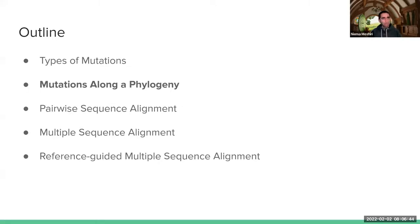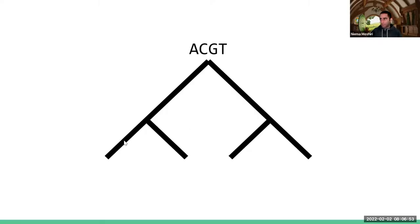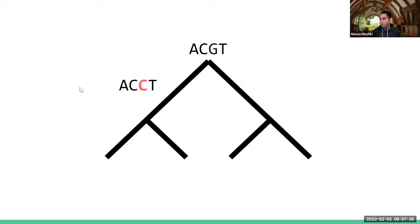Now that we've reviewed types of mutations, let's talk about how these mutations happen along an evolutionary tree — a phylogeny. Imagine I have some ancestral sequence, say ACGT, as the common ancestor of four present-day species. Mutations happen along branches of the evolutionary tree as we go forward in time away from the root. For example, along one branch, the G in the third position had a substitution and mutated into a C. Starting from where that mutation happened, all the way down the tree, that mutation is inherited by all the descendants.